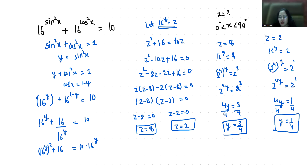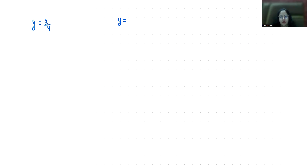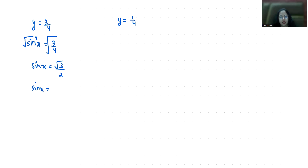Recalling that y equals sin²x, we have two values of y. For y equals 3/4, sin²x equals 3/4. Taking the square root of both sides gives sin x equals √3/2. Since sin 60° equals √3/2, x equals 60°.